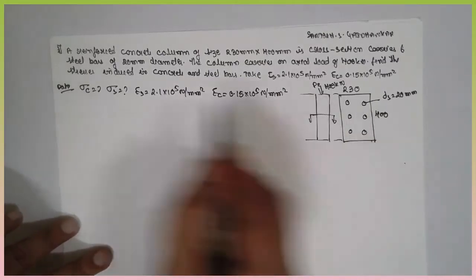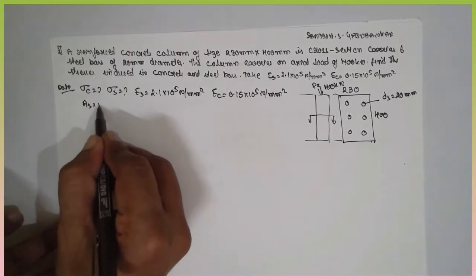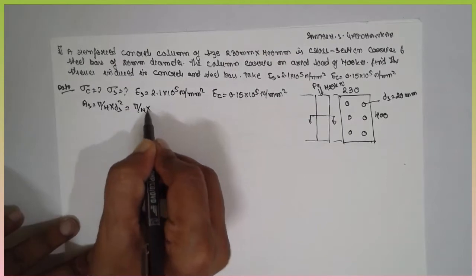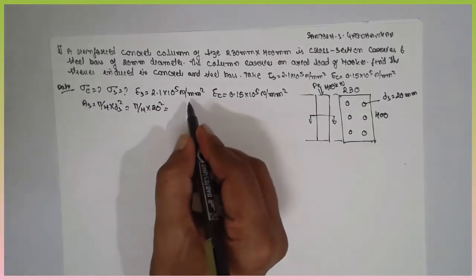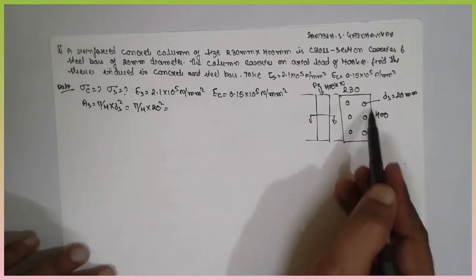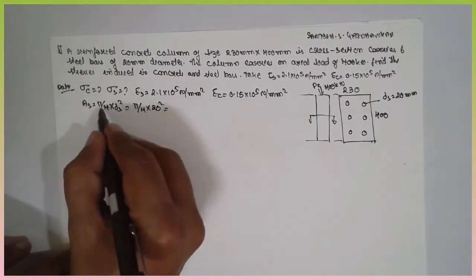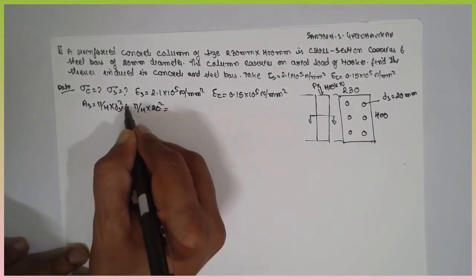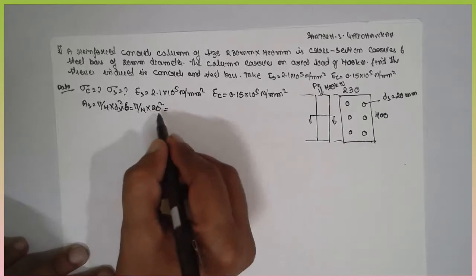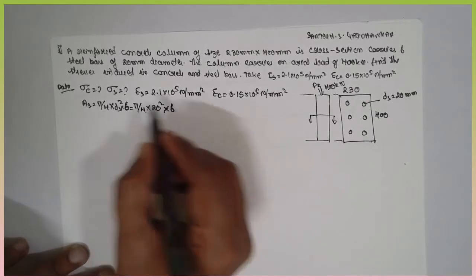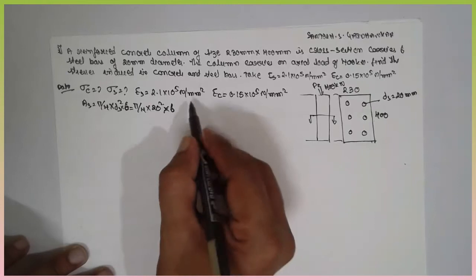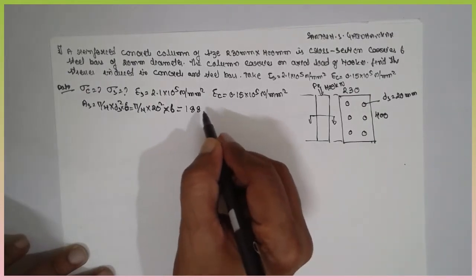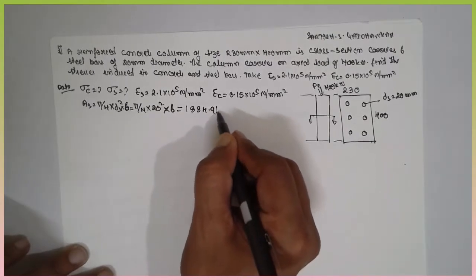Now, we are going to find out the area of the steel. As is equal to pi by 4 into ds square. Pi by 4, 20 square. Now, there are six steel rods. Therefore, multiply with six. The answer is 1884.96 mm square.